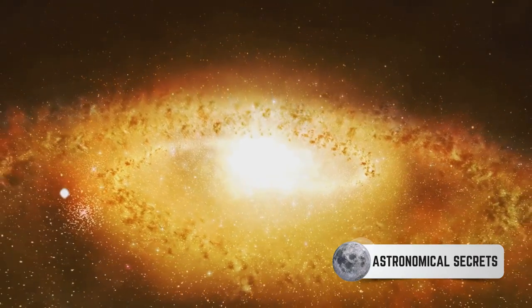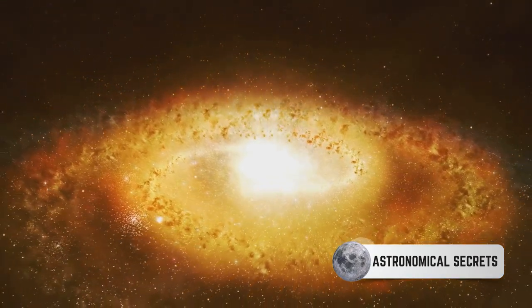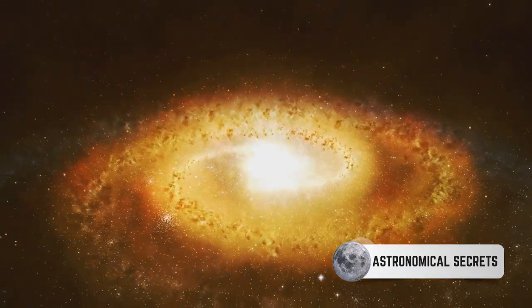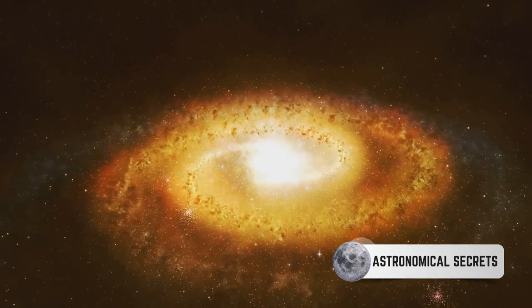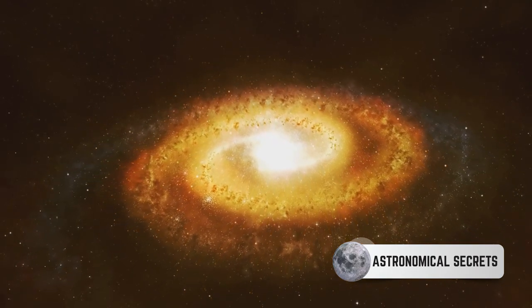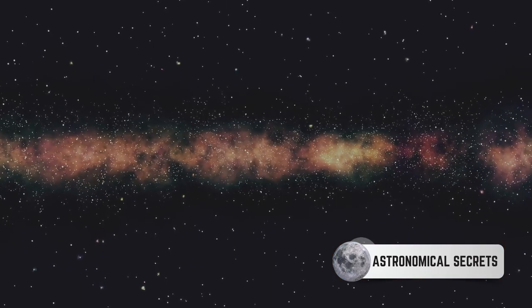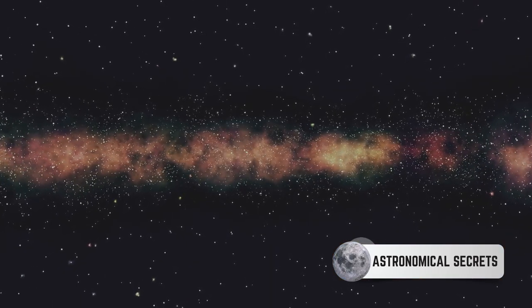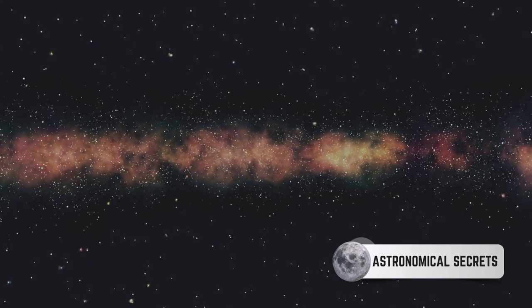In the grand scheme of the Milky Way, the halo and its dark matter play an integral role. The gravitational pull of this dark matter keeps the stars in our galaxy orbiting at their observed speeds. Without it, the outer regions of the Milky Way would fly apart, their stars flung into the cosmic void.